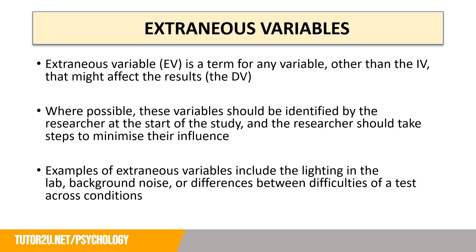Let's begin with thinking about what an extraneous variable is. An extraneous variable, or EV, is a general term for any variable other than the IV that might affect the results or the change within the dependent variable. Where possible, these variables should be identified by the researcher at the start of the study, and the researcher should take steps to minimise their influence.